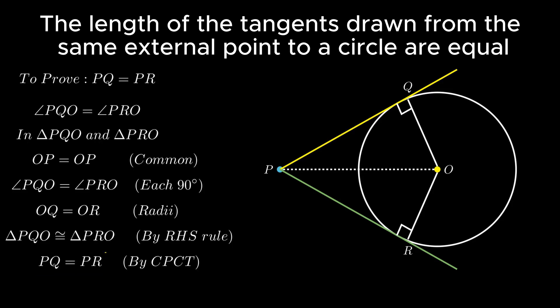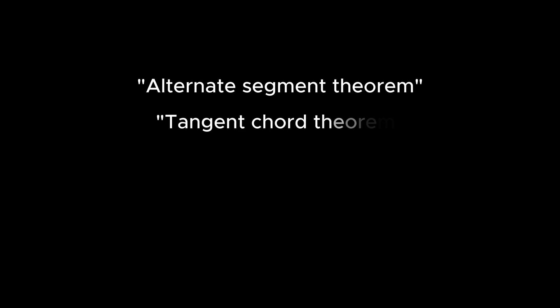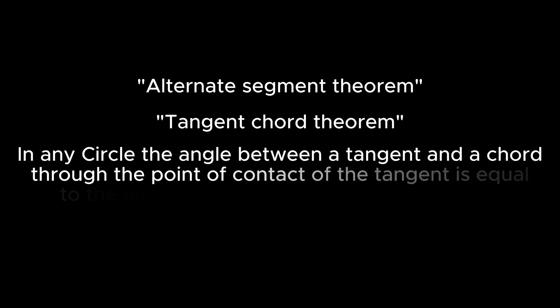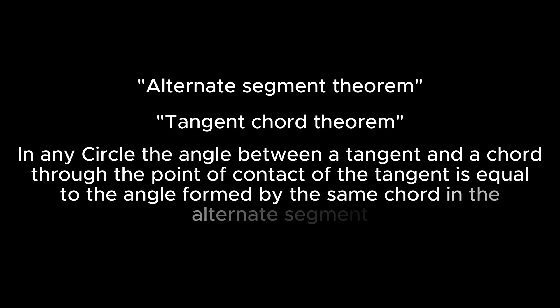Moving on to the next theorem — the Alternate Segment Theorem. This theorem is also known as the Tangent-Chord Theorem and states that in any circle, the angle between a tangent and a chord through the point of contact of the tangent is equal to the angle subtended by the same chord in the alternate segment.